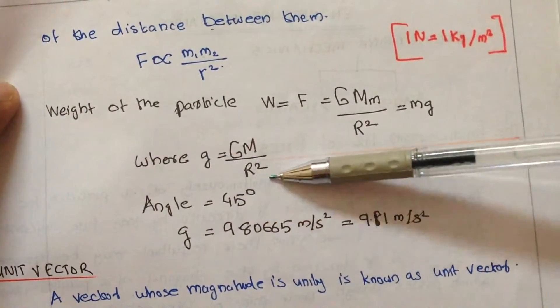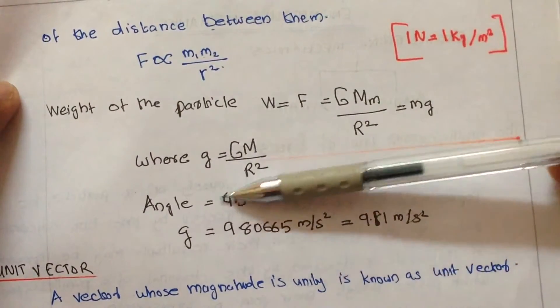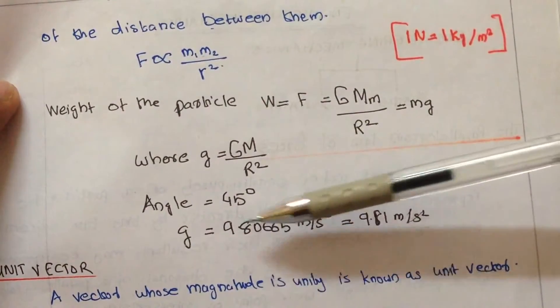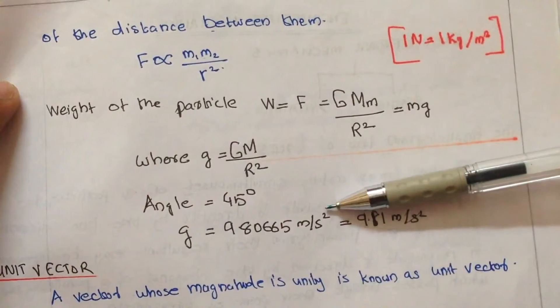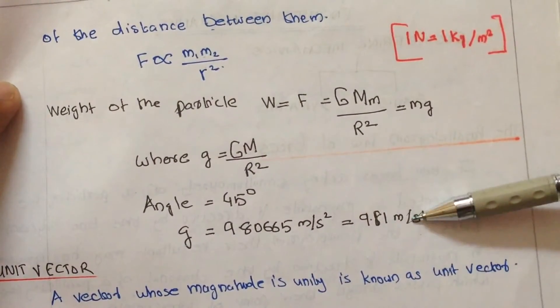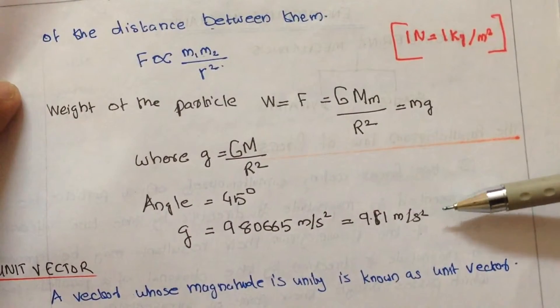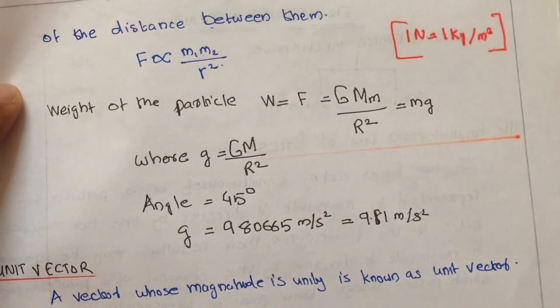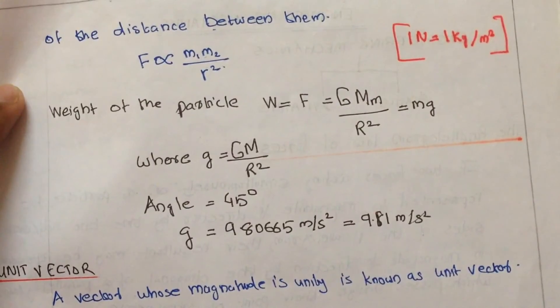Where g we can find by G M by r squared, angle is 45 degrees, so g is 9.80665 meters per second squared, approximately 9.81 meters per second squared. This is about Newton's law of gravitation, thank you for watching, bye bye.